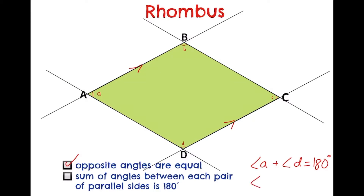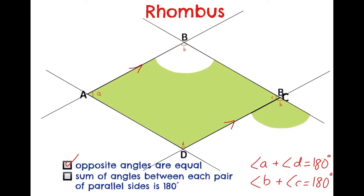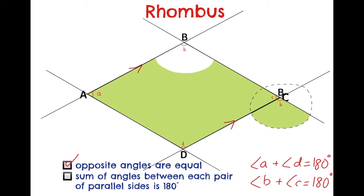We can also say that angle B plus angle C is equal to 180 degrees. I'm going to cut out angle B and shift it downwards, and you will see it forming another straight line. So yes, that is correct. Another pair of parallel lines we can find is line AD and line BC.